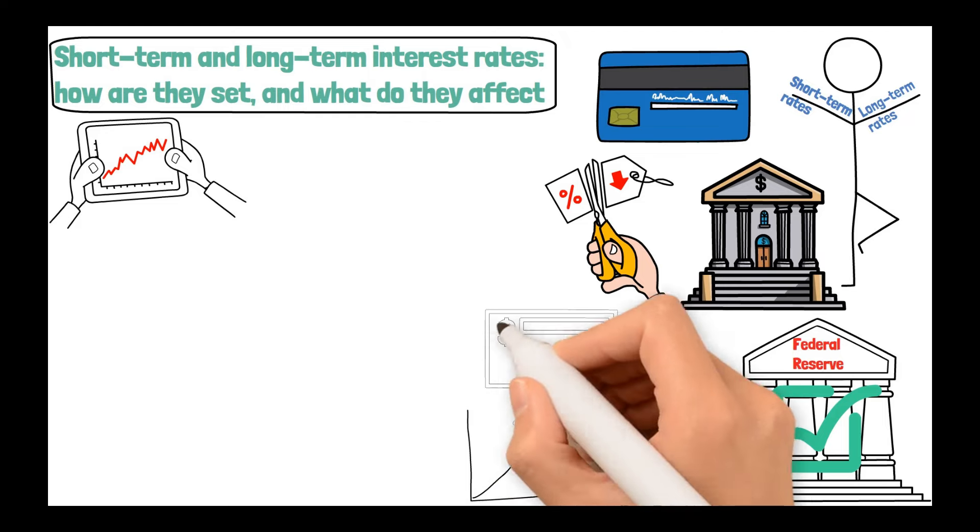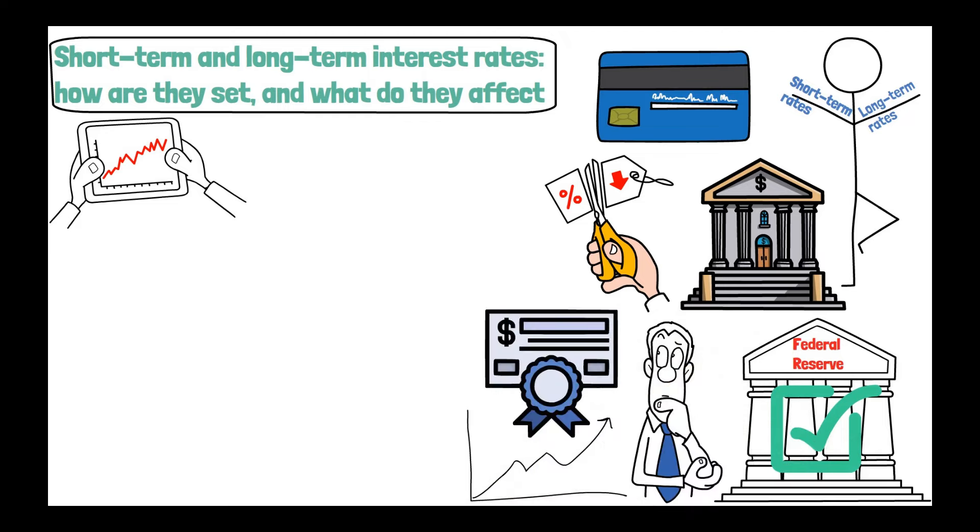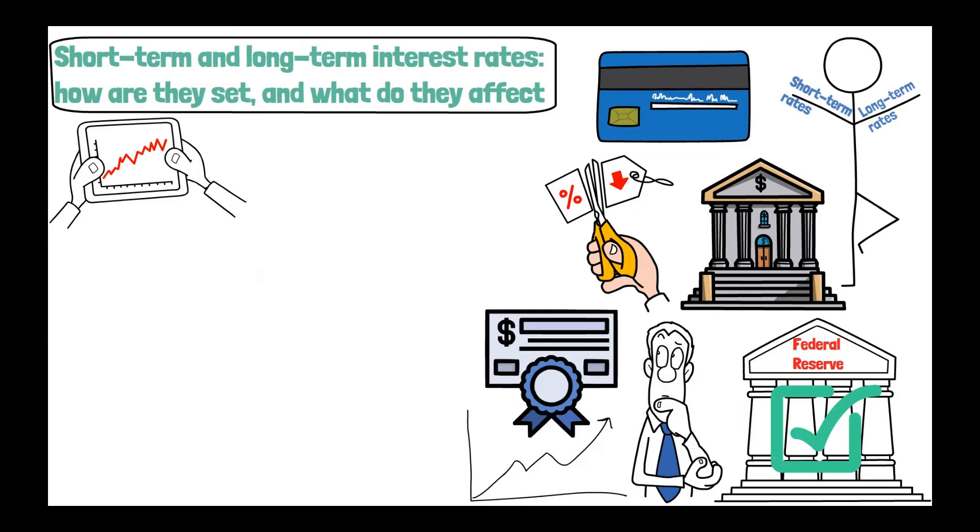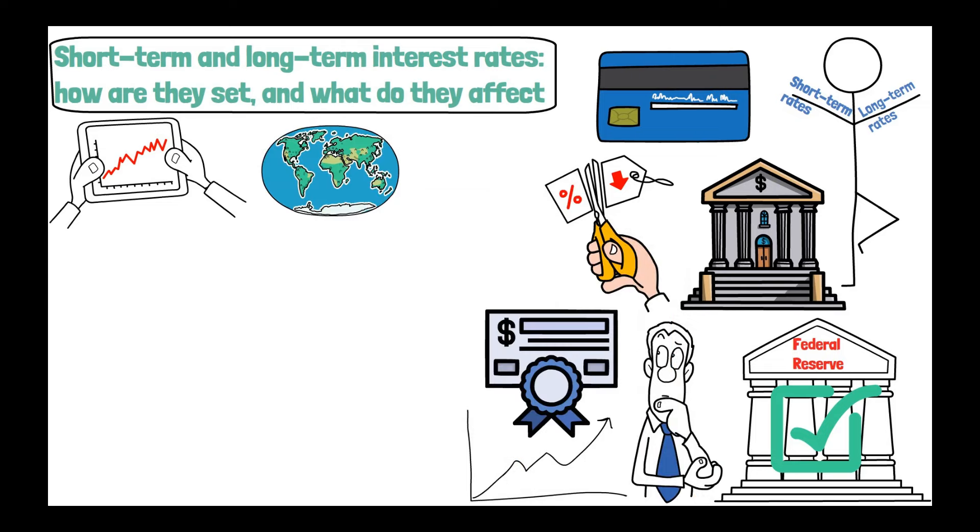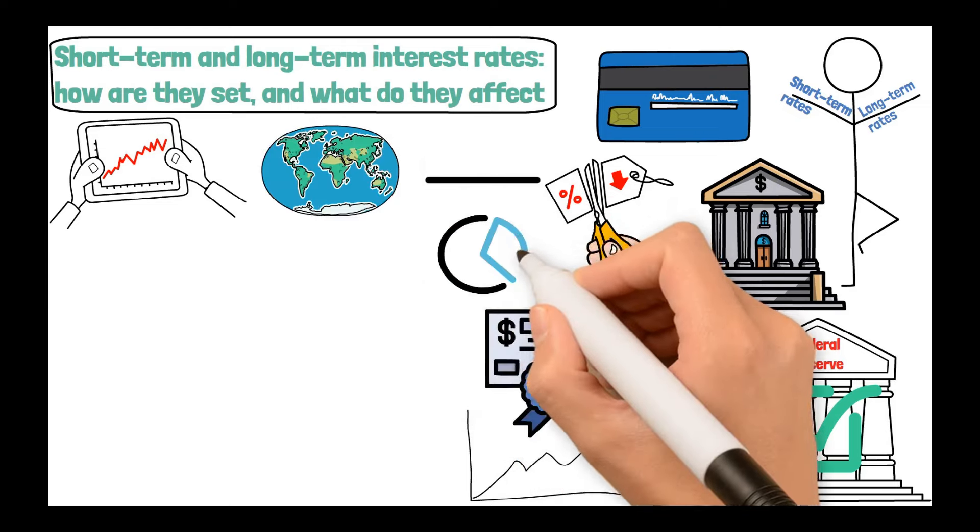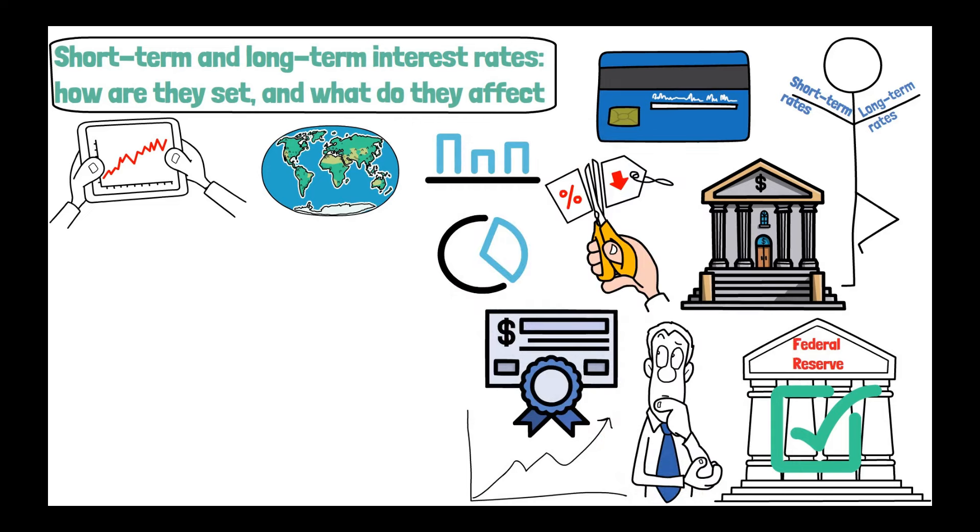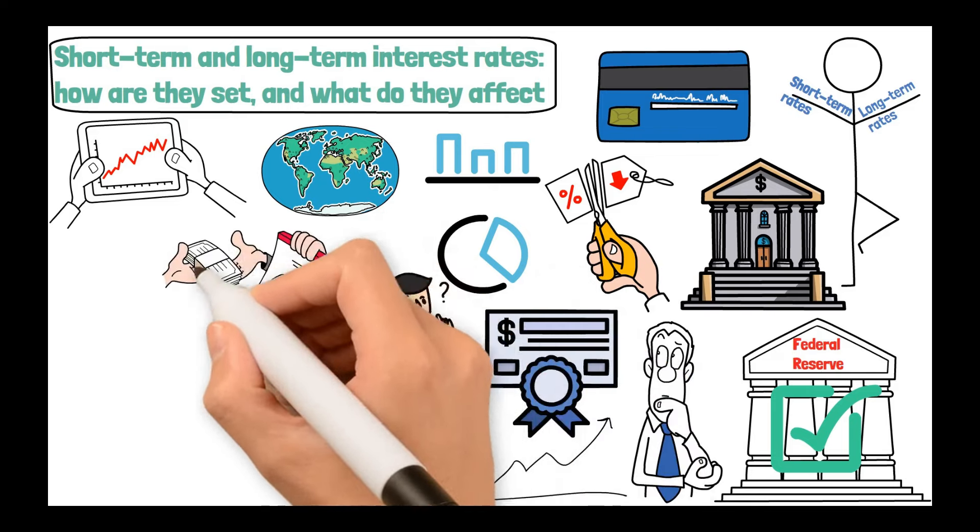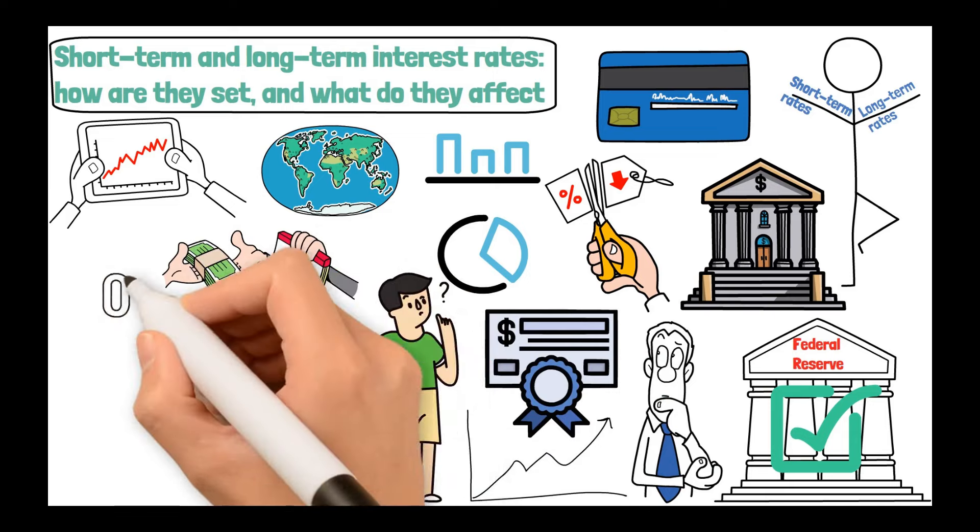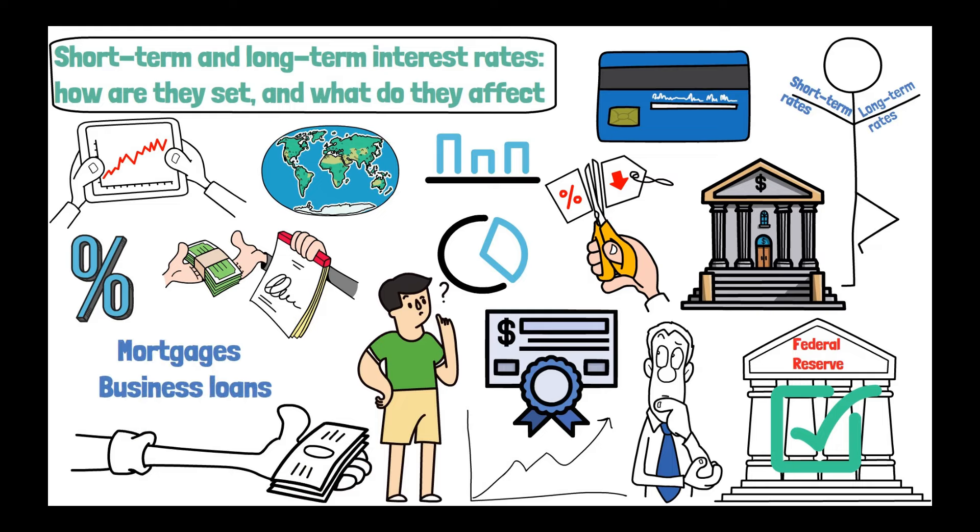On the other hand, the long-term rates are set by the market and influenced by factors like inflation expectations and global economic conditions. So, in the bond market, long-term rates are determined by the yield on government bonds. Think of it as a popularity contest for countries' debt. The cooler the country's economic outlook, the lower the yield, and vice versa. But what do these rates affect? Well, short-term rates impact how much you pay on short-term loans and the interest you earn on deposits. Long-term rates, on the other hand, shape the cost of long-term borrowing, the mortgages and business loans.